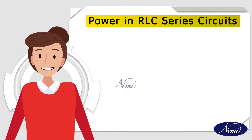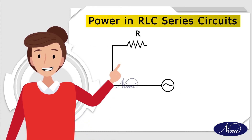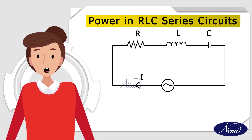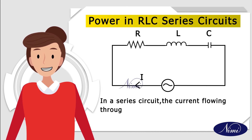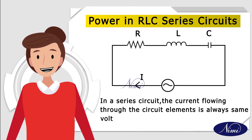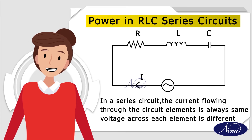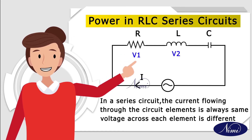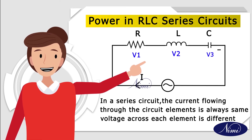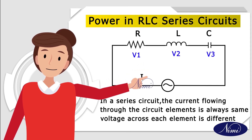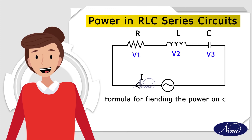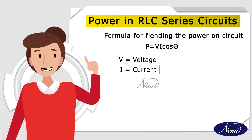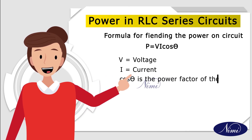Power in RLC series circuit: in a series circuit, the resistance, inductance, and capacitor are connected in series. In a series circuit, the current through the circuit is always the same, but the voltage across each element is different. We calculate V1 as the voltage across the resistor, V2 as the voltage across the inductor, and V3 as the voltage across the capacitor. The formula for power is P equals V·I·cos theta, where V is voltage, I is current, and cos theta is the power factor.